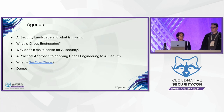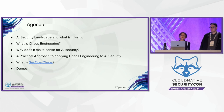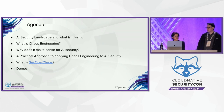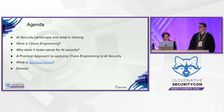Here's a quick look at our agenda for today. We'll talk about the AI security landscape and what is missing from a threat modeling perspective. We'll then talk about what chaos engineering is and why it makes sense to apply to AI security. Then we'll discuss a practical approach we've built, including SecOps Chaos, an open source tool you can check out today, followed by live demos showcasing three attack scenarios against OpenAI APIs using SecOps Chaos.